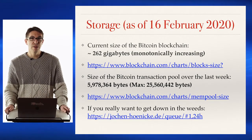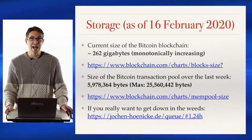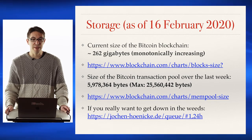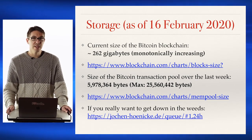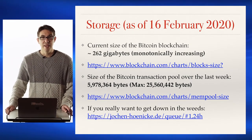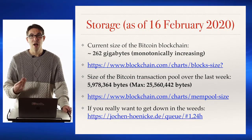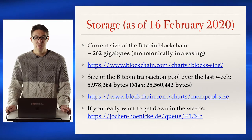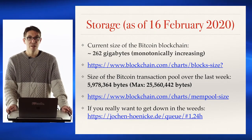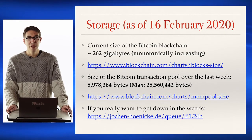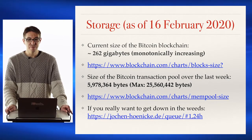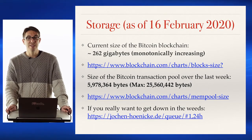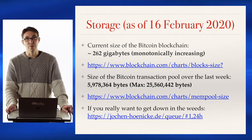Storing all of these blocks — the blockchain — as well as the temporary transactions that haven't yet been put into a block (the transaction pool) takes up a not insignificant amount of space. As of when this lecture was recorded, the current size of the Bitcoin blockchain was about 262 gigabytes, and this is monotonically increasing — every block added only grows the size. The Bitcoin transaction pool has been a little over five megabytes on average over the last week, with a max of 25 megabytes. Links are included on the slide if you'd like to check the current statistics.